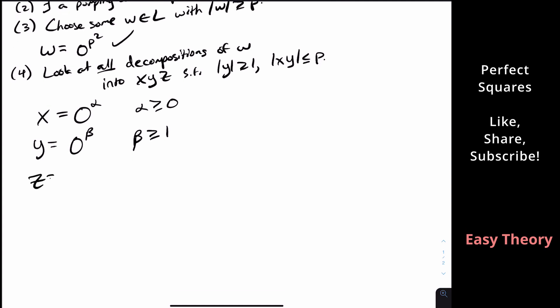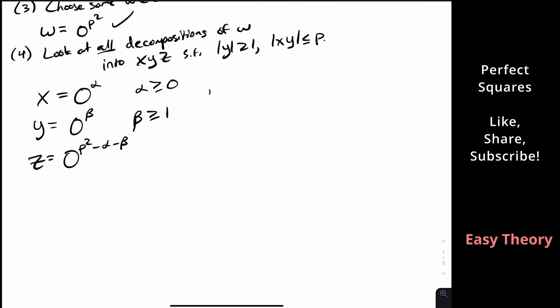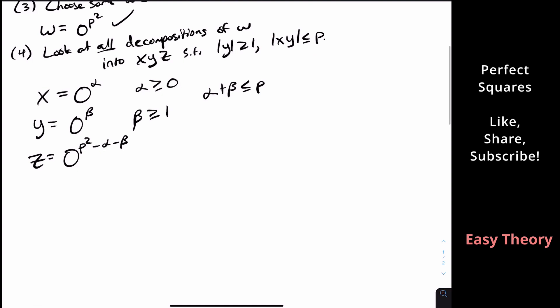Since x, y, z together make up W, z is the rest of the string. We started with P² zeros, took away α for x and β for y, so z has P² − α − β zeros. We should also note that α + β ≤ P, since that's exactly what the condition that the length of x plus the length of y is at most P says.